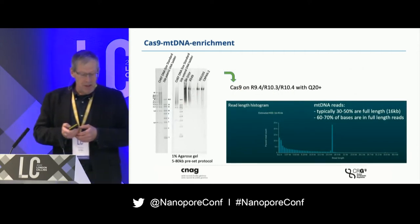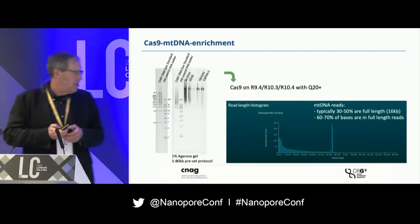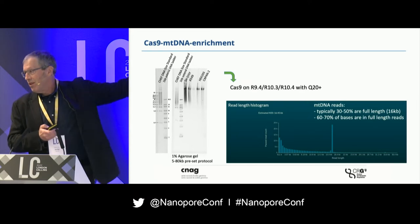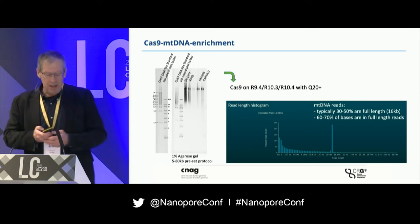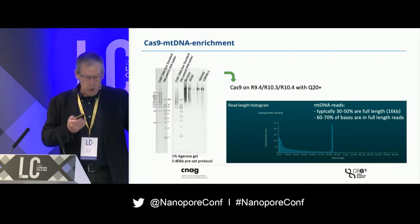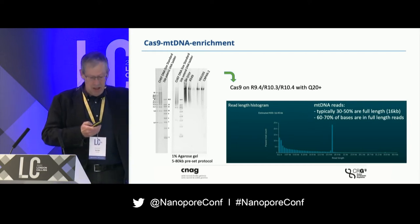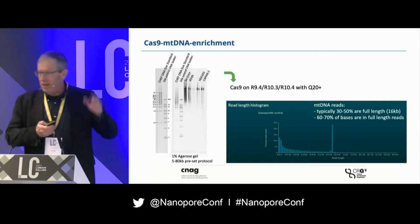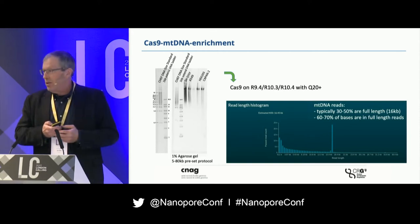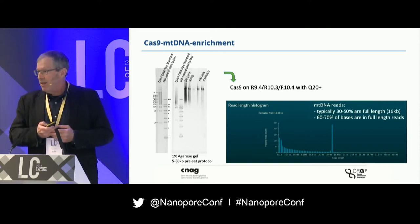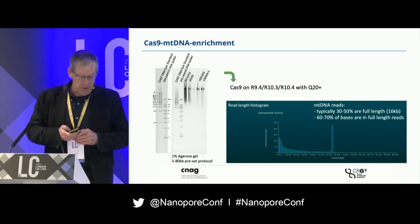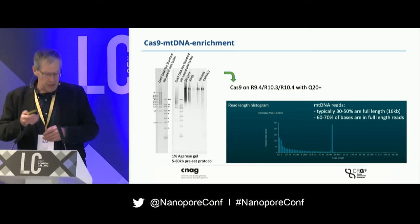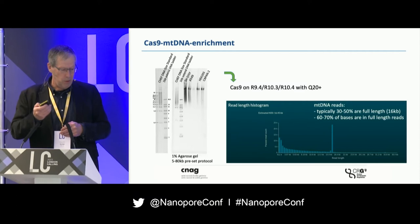This is what it looks like when running through a sequencer — you have a 16.6 kb fragment that you predominantly see in these runs. You can do this using the R9.4, 10.3, or 10.4 chemistries. You can use it with Q20 chemistry, and it doesn't even matter that much which one of these tools you use — it works quite well on all of them.